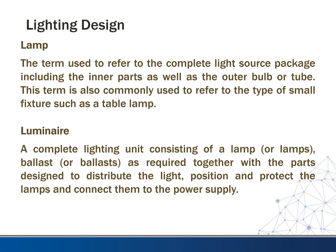First is lamp — the term used to refer to the complete light source package including the inner part as well as the outer bulb or tube. This term is also commonly used to refer to the type of small fixture such as a table lamp. Luminaire is a complete lighting unit consisting of a lamp or lamps, ballast or ballasts as required, together with the parts designed to distribute the light, position and protect the lamps, and connect them to the power supply. The correct term is luminaire, not 'light fixtures' or 'lights.'